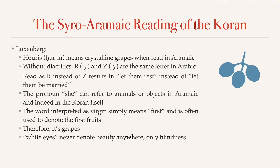For the next part, we see a different element of Luxenberg's approach. Without diacritics, the letters R and Z are the same in Arabic — you can see that Z has a little dot on top while R doesn't, but that's the only difference. As we learned previously, in the earliest manuscripts there were no dots at all, so you can't tell R from Z. Luxenberg argues a mistake was made when those dots were added. In that verse, if you change just one dot, then instead of 'let them be married,' it says 'let them rest' — a big difference made by removing a single dot.